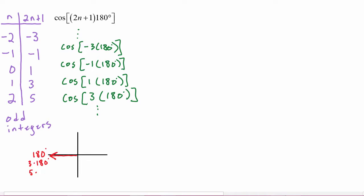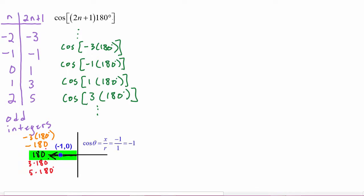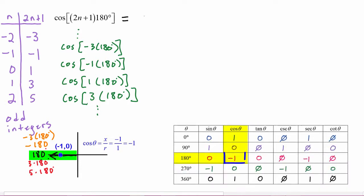Going in the negative direction, negative 1 times 180 lands right here on the negative x-axis. Negative 3 times 180 means going negative 1, negative 2, negative 3 times 180 — also on the negative x-axis. All of these odd multiples always land on the negative x-axis, and we know that the cosine of any angle on the negative x-axis is negative one.